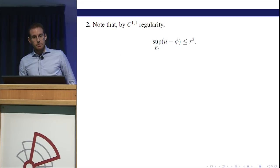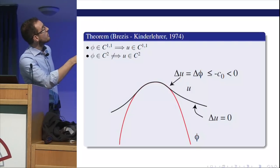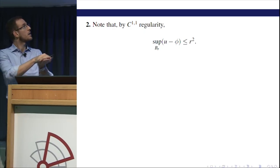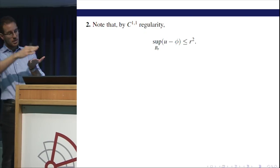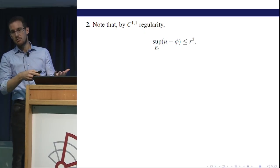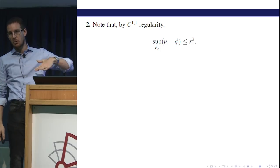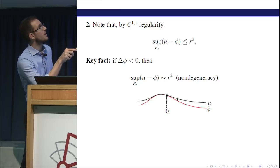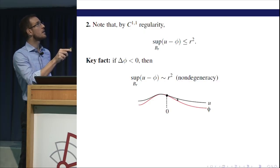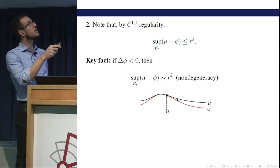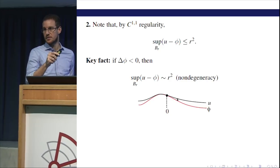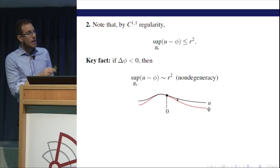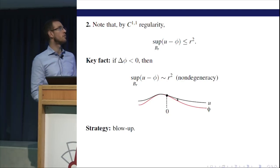By C1,1 regularity, if you take a free boundary point at zero, the function U is C1,1 and phi is C1,1; they coincide at a free boundary point, and they cannot detach faster than R squared. The key fact in this problem is that if the Laplacian of phi is strictly negative, you can prove a lower bound of the same kind. Not only is the sup bounded by R squared from above, it's also bounded by R squared from below — up to constants. So your function behaves like R squared. This is the non-degeneracy property, and this is crucial because then you can try to use the blow-up strategy for the free boundary.